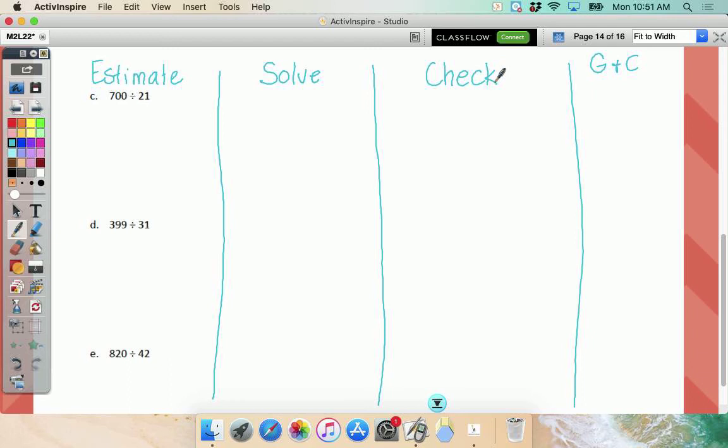These are the four things we have to do. If I had to say one of them was the most important, except for solving, it's probably going to be guess and check, and it's what kids keep skipping. So we're going to start with C. Let's write down 700 divided by 21.